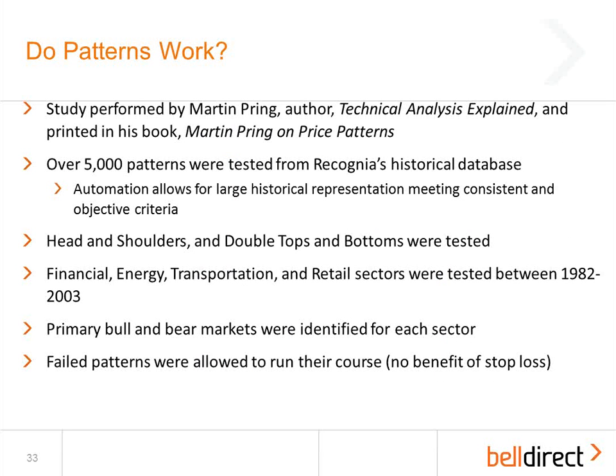In his study, Martin looked at over 5,000 different classic patterns out of Recognia's database, focusing on a small subset — head and shoulders, double tops, and double bottoms — and studied a number of different sectors: financial, energy, transportation, and retail, between the years 1982 and 2003. The reason for that long historical period is he wanted to have many different primary bull and bear markets for each of these sectors. The pattern length L is defined as the time from when we cross the neckline in the downward direction to the time we cross it in the upward direction. If that's 50 days, then the time frame to achieve the target price is roughly 50 days.